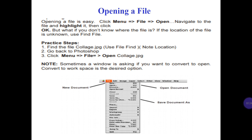Practice steps. Number 1: find the file College.jpg — use File > Find if you don't know its location. Number 2: go back to Photoshop. Number 3: click the menu, then File, then Open College.jpg. Note: sometimes a window asks if you want to convert to the workspace — Convert to Workspace is the recommended option.